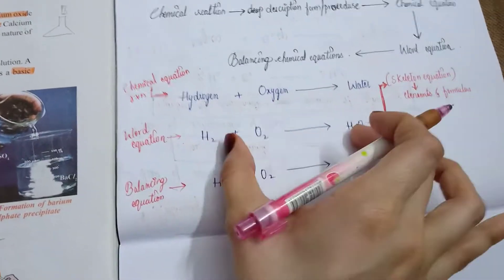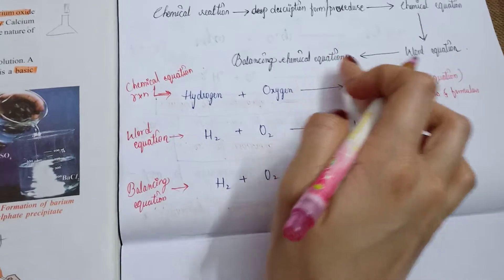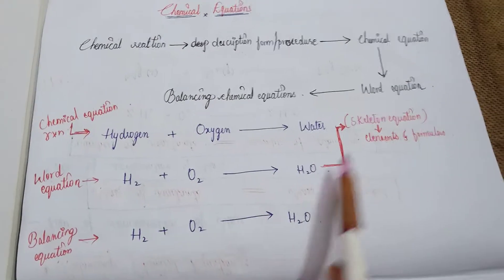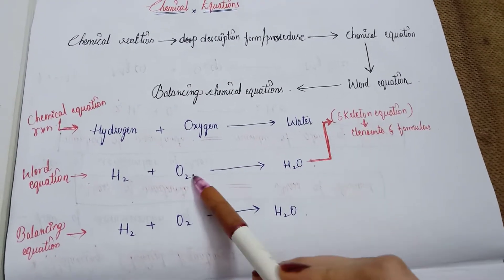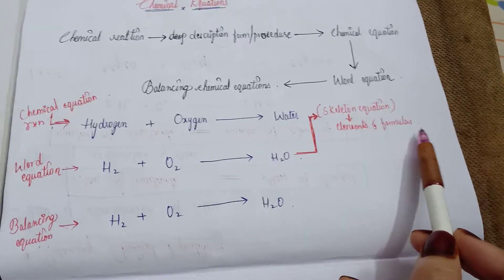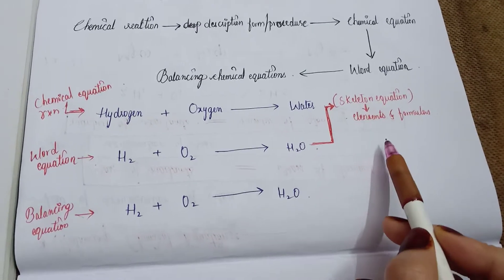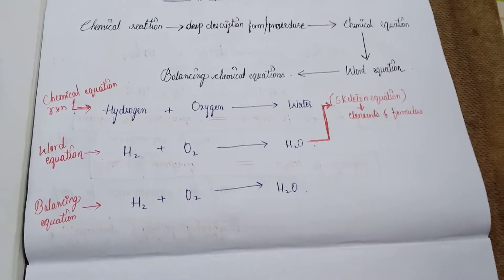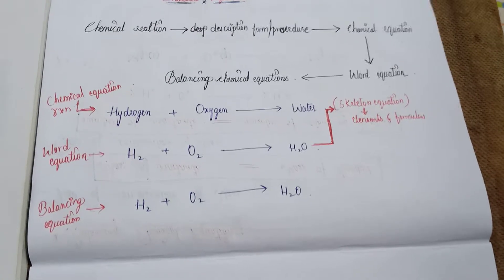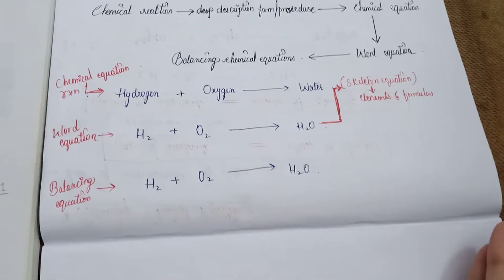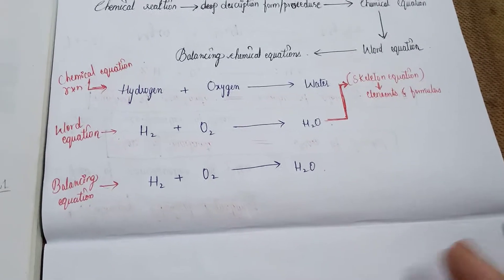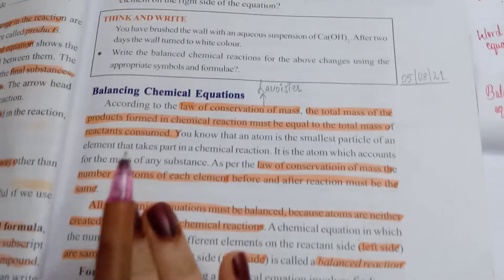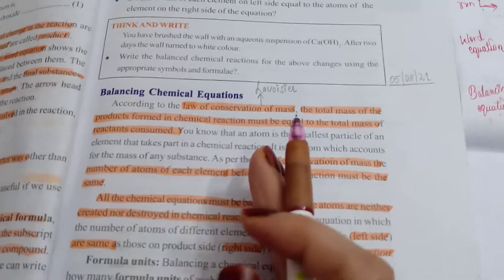Now we have to balance this word equation — that is, balancing the chemical equation. This word equation is like a skeleton equation: it has atoms, elements, and symbols, but it needs balancing. Just like our body has a skeleton that needs balance, skeleton equations also need balancing.